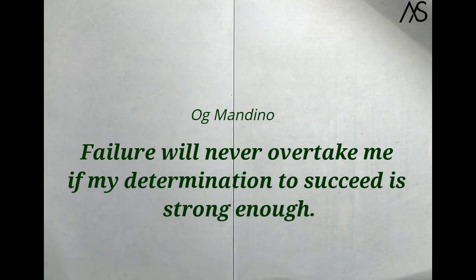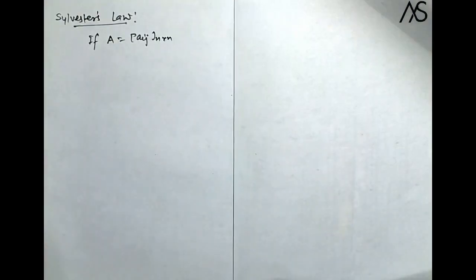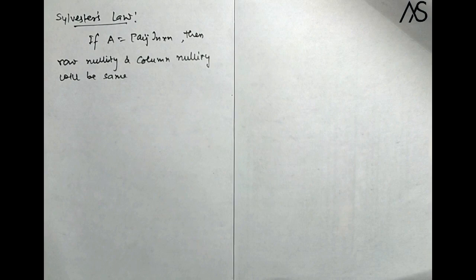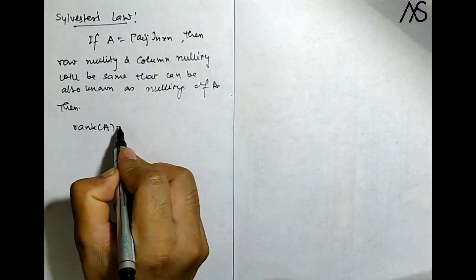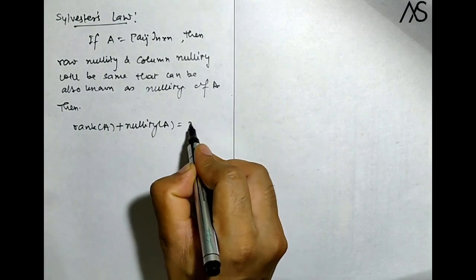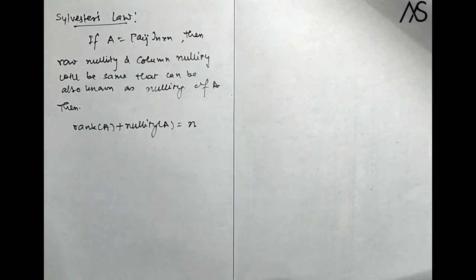Today we are going to introduce Sylvester's Law, which is very important in matrices. This is also called the Rank-Nullity Theorem. When we go into vector space, it is known as the Dimension Theorem. We will do the proof in vector space, but we will do the application here. For a square matrix A of order n, the row nullity and column nullity are the same, known as nullity of A. Then rank of A plus nullity of A is equal to n.